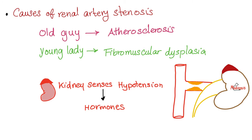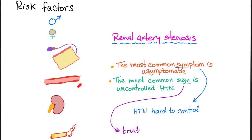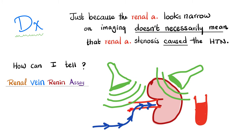Since this hypertension has a cause, it's called secondary hypertension. Most patients with renal artery stenosis are asymptomatic. Those who are symptomatic present with hypertension, typically as headache. You can listen with a stethoscope — because the artery is narrow, blood flow velocity increases, creating turbulence that can be heard as a bruit. You can also see the narrowing on ultrasound.